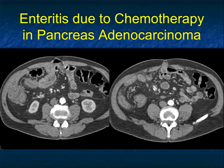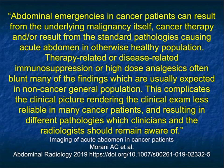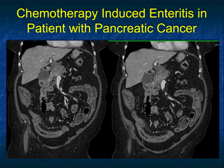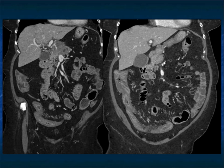This is enteritis secondary to chemotherapy. It's important to realize that abdominal emergencies in cancer patients can result from the underlying malignancy, cancer therapy, or standard pathologies. In oncology patients, you've got to think about the treatment. Here's another example — also pancreatic cancer, enteritis of the small bowel due to chemotherapy. Sometimes the small bowel involvement can be really impressive, and yet the patients are asymptomatic. With chemotherapy, you see more distal involvement — the ileum, which has the fastest reproducing cells, tends to be the most common area involved.